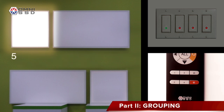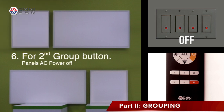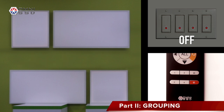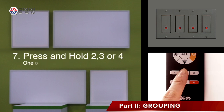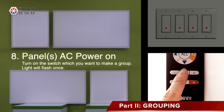Since you've completed the first grouping, let's do group number two, three, and four, all following the same procedure: turning off the AC, hold down the grouping button that you wish to put your lights in, turn the power back on and they will flash — you have completed that group.